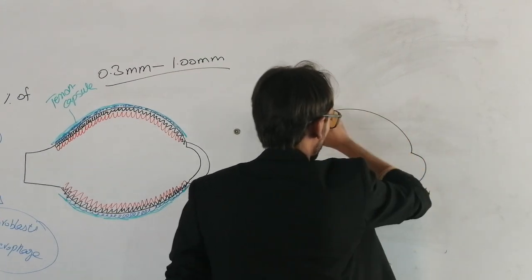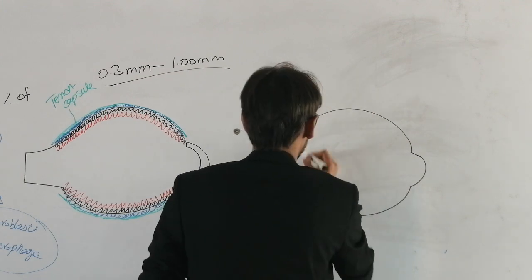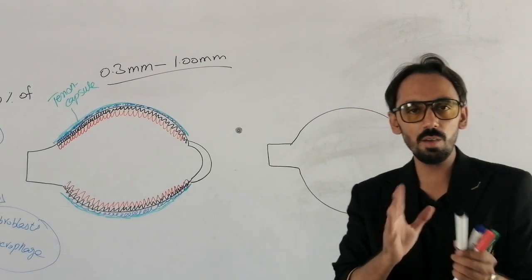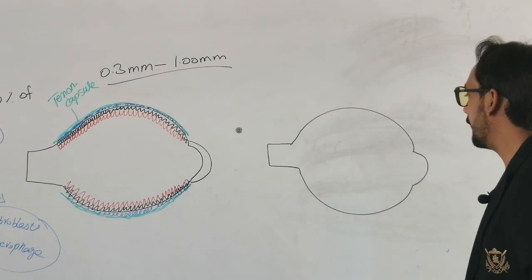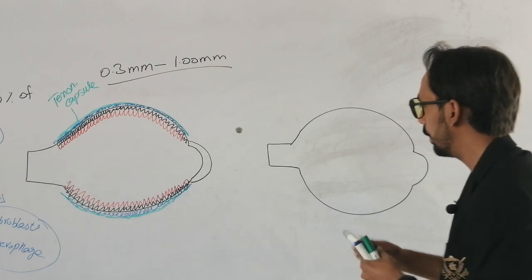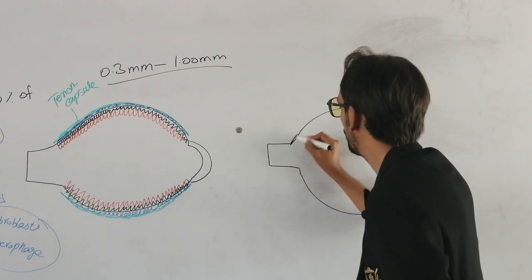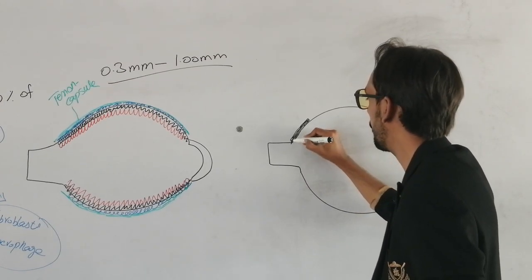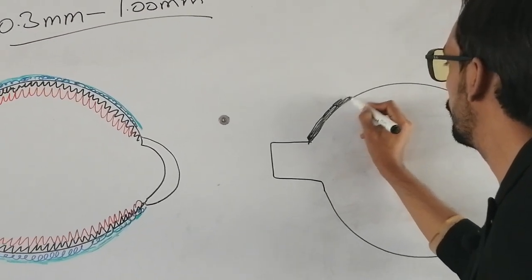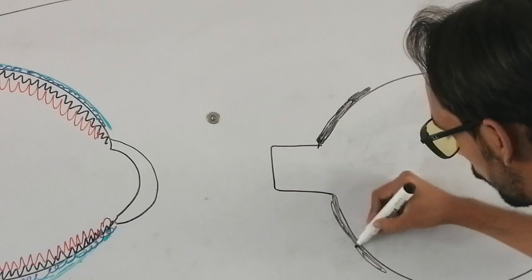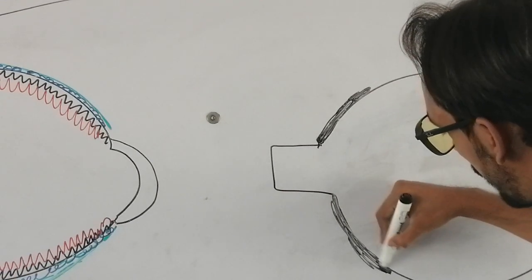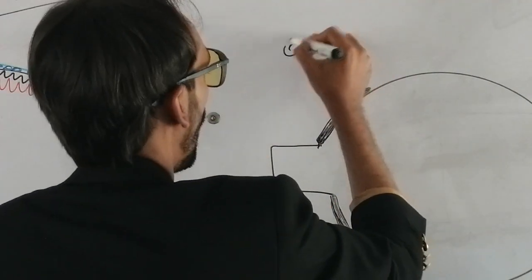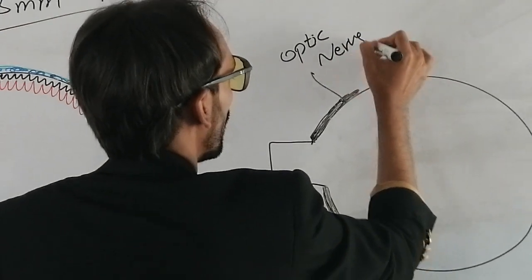I am going to make another eyeball here. Now we will discuss about the different thickness levels of the sclera. The sclera is very thickest from the posterior side. The thickness of the sclera is maximum, as you can see, at this level. And this location is exactly the optic nerve head.